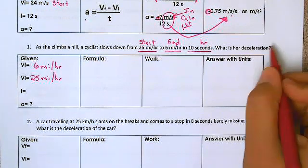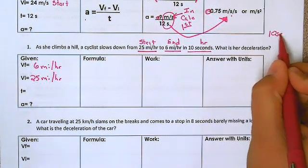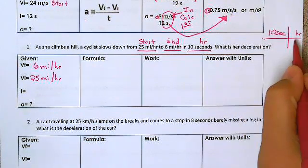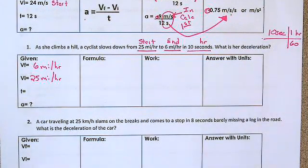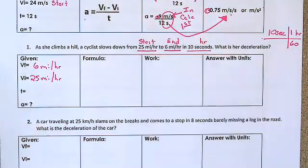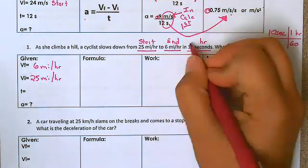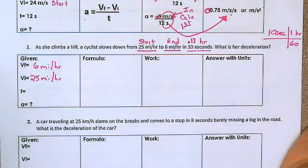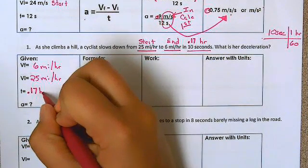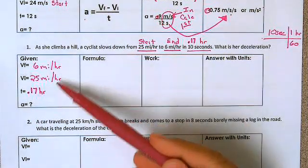So if we have 10 seconds and we want to change it into hours, we know that there is 60 seconds in one hour. So we're going to take 10 divided by 60 to get our answer in hours. So 10 divided by 60 gives us 0.17 of an hour. So our time is 0.17 hours. Because we need all of the units to match.